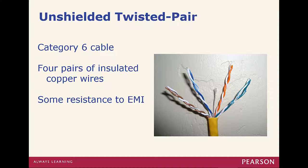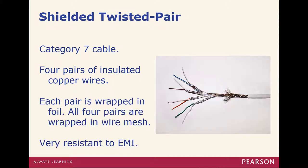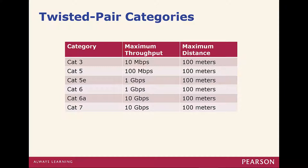Category 6, or Cat 6 cable, provides some resistance to EMI, though it's not totally immune. There is also Cat 7, which has four pairs of insulated copper wires with insulation around that, making it very resistant to EMI. For the throughput chart: Cat 3, Cat 5, 5E, 6 — Cat 6 at certain distances can do 10 gigabit per second. Cat 6A does 10 gig. Cat 7 does 10 gig. Almost all of them are 100 meters, and that is pretty standard.